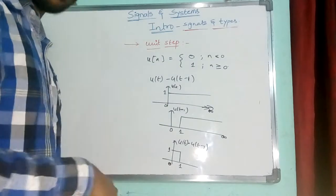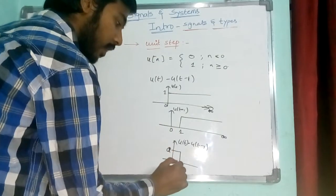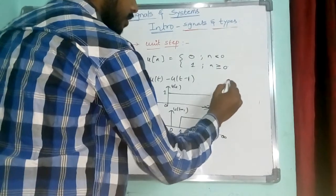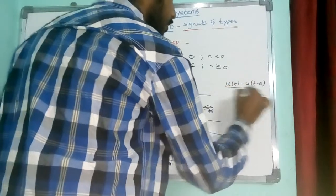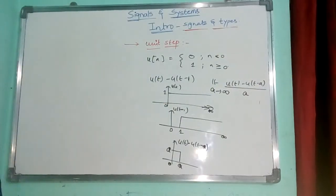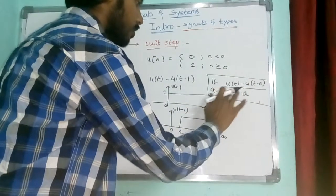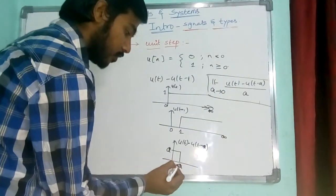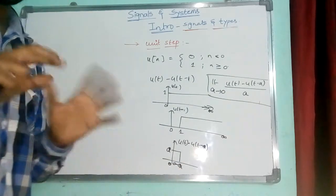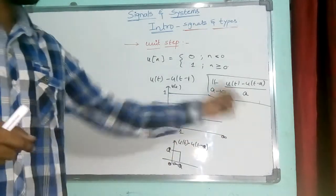In order to convert this rectangular signal into an impulse in the continuous domain, we use: lim as a→0 of [u(t) − u(t−a)] / a. Taking this limit gives us the impulse. But the resulting impulse will still have some deviation from the ideal.